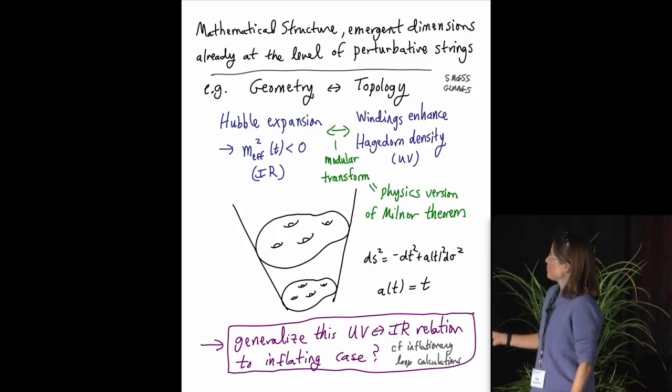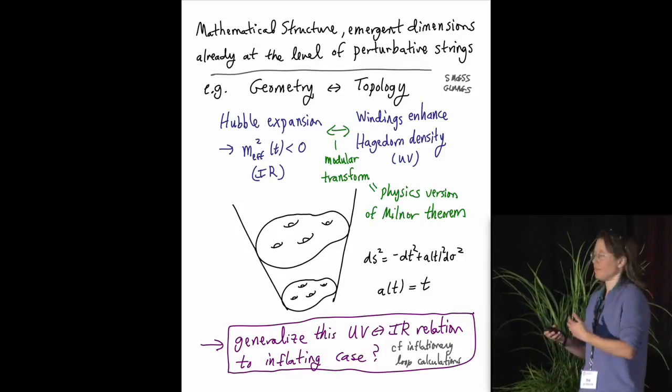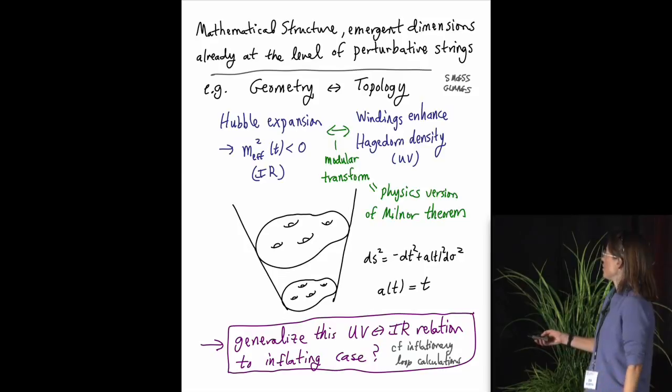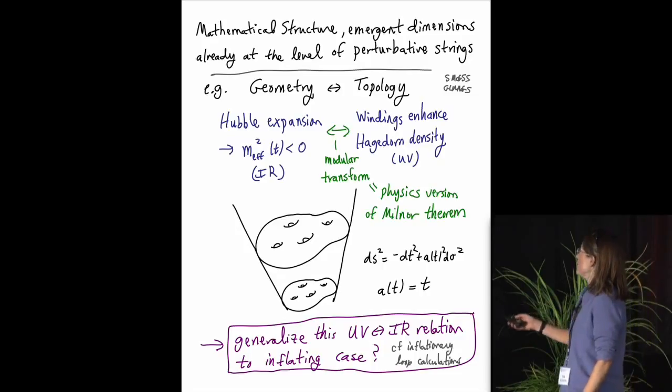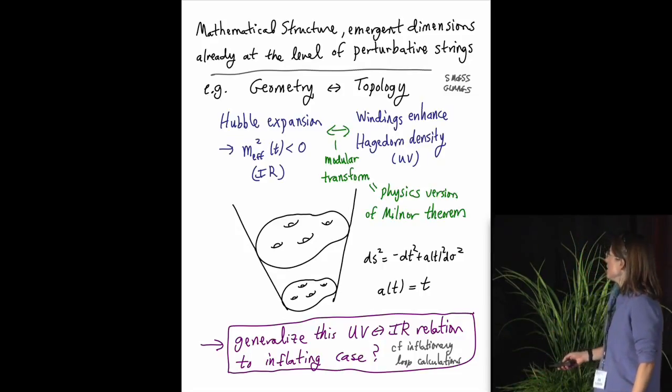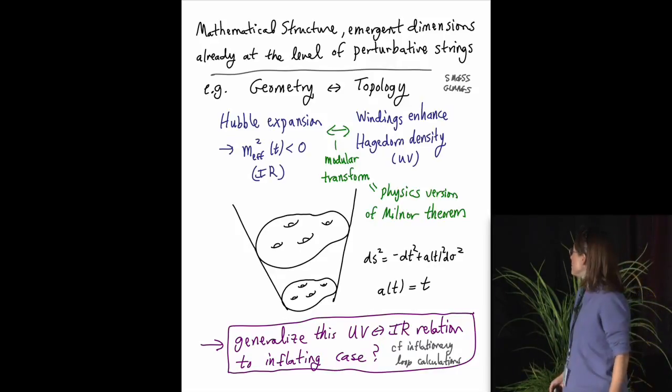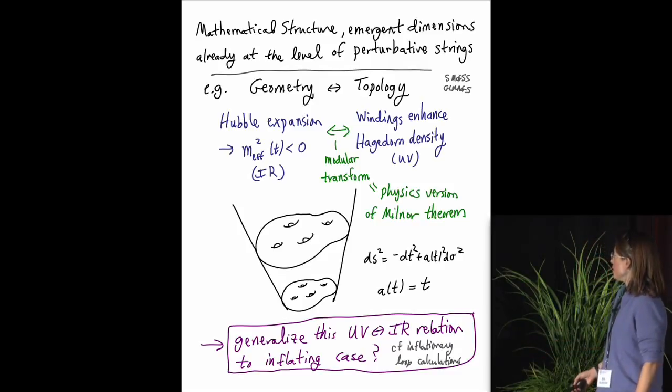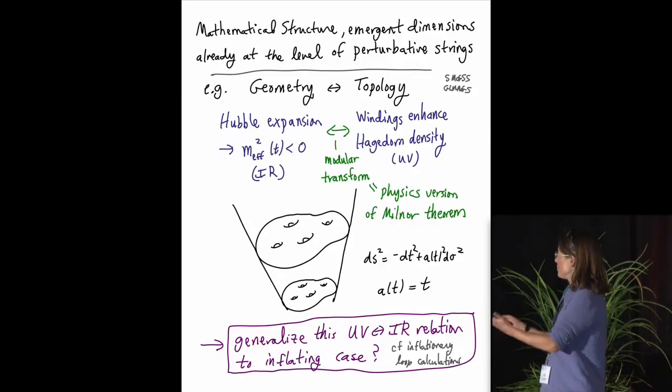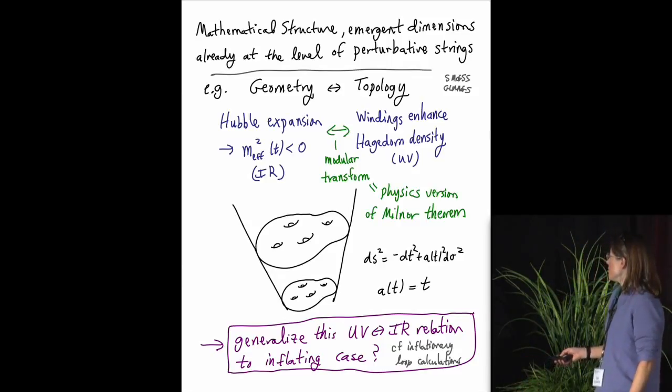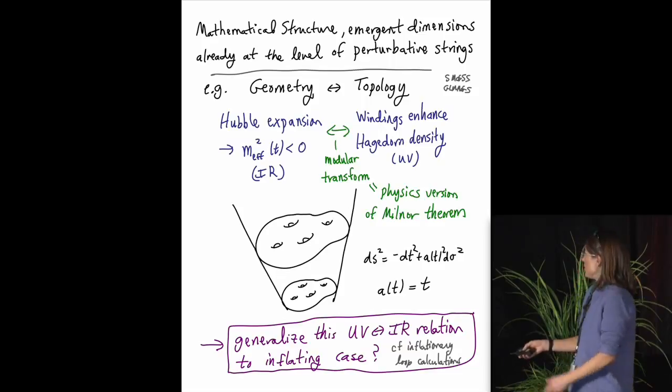is a relation between the infrared dynamics of Hubble expansion and the perturbations that grow in that type of background, related by a string modular transformation to the ultraviolet density of states of the perturbative string theory. This is a precise relationship which realizes a theorem of Milner, the mathematician, relating geometry to topology. And this relation fascinates me just already in this context of compact negatively curved target spaces. And it raises the question of whether this UVIR relation generalizes to the realistic situation, where instead of curvature-dominated expansion, we have inflationary expansion.